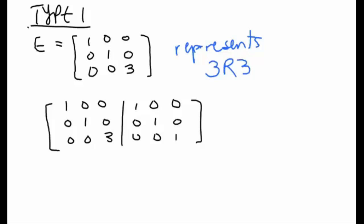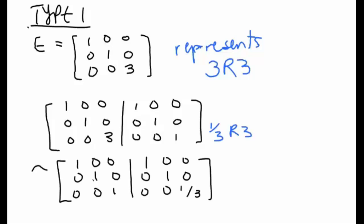This particular elementary matrix represents the operation 3 times row 3. If we want to find the inverse of this elementary matrix we can attach a 3 by 3 identity matrix to E and we'll try to simplify the left hand side to get reduced row echelon form. So in order for us to get reduced row echelon form on the left side we're going to divide row 3 by 3.